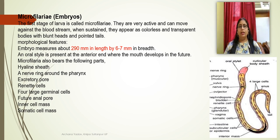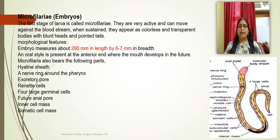Morphological features: the embryo measures 290 mm in length and 6 to 7 mm in breadth. An oral stylet is present at the anterior end, which forms a mouth in future. Microfilaria also bears a hyaline sheath, nerve rings, nephridial pore, somatic cells, subcuticular cells, and germinal cells.